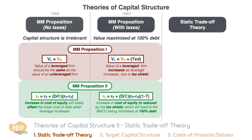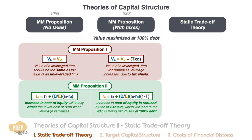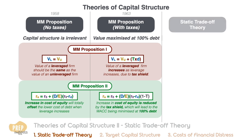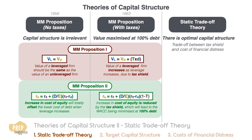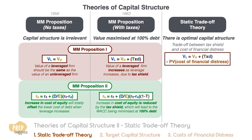We continue from where we left off in the last lesson. While the MM proposition with no taxes says capital structure is irrelevant, and the MM proposition with taxes says value is maximized at 100% debt because of tax shield, the static trade-off theory says there is an optimal capital structure. The trade-off is between the tax shield and the cost of financial distress. The value of a levered firm equals the value of an unlevered firm plus the tax shield minus the PV of the cost of financial distress, and is maximized when that net difference is at a maximum.